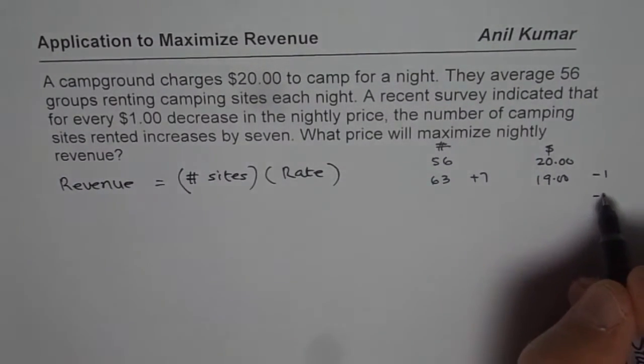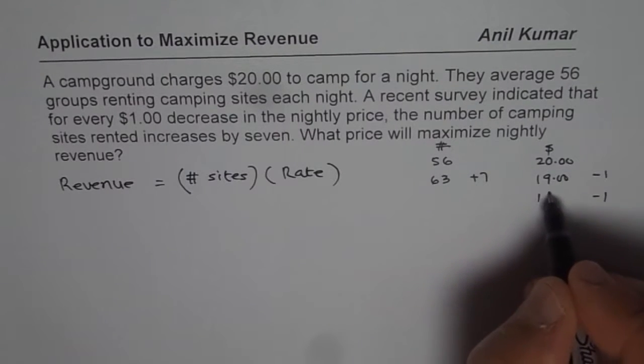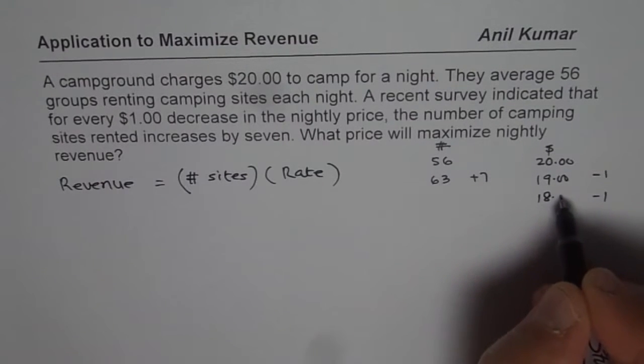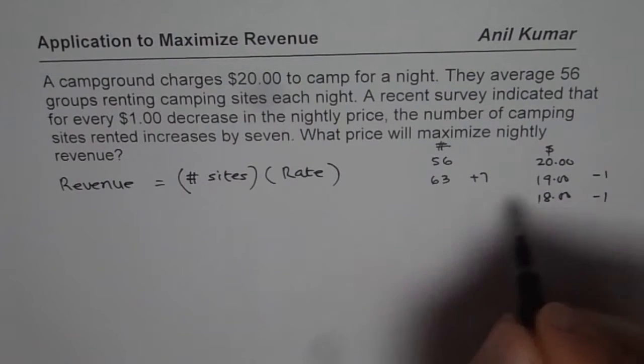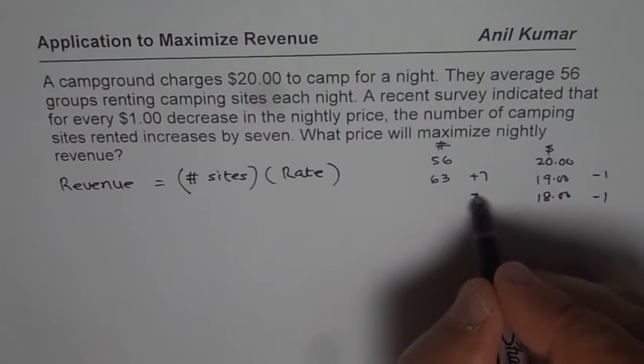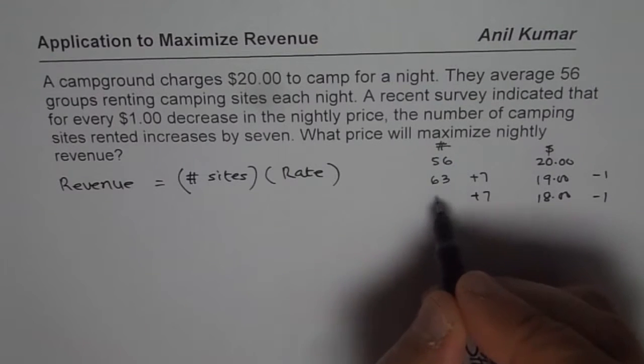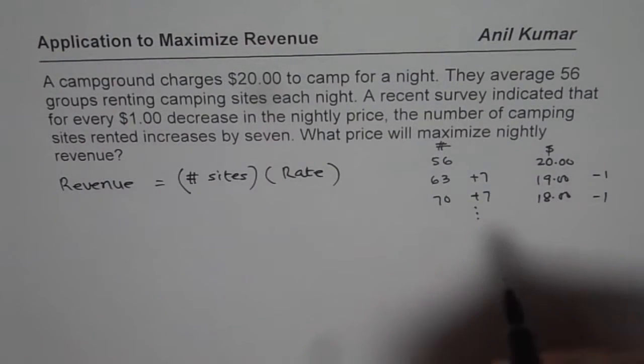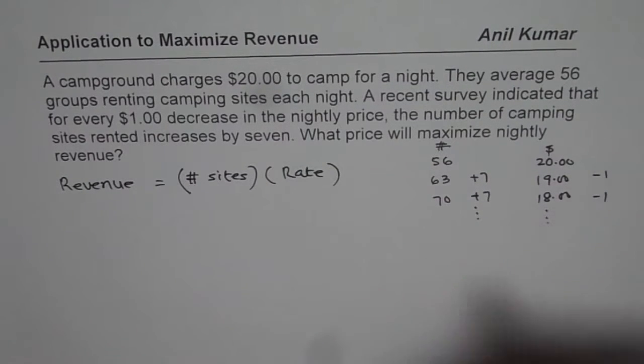Another dollar decrease — if the rate is $18 — then we can rent 7 more, that means 70. So like this, the pattern is followed.